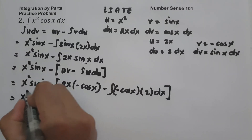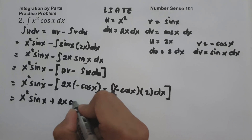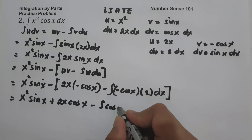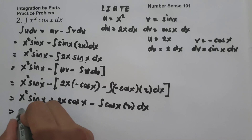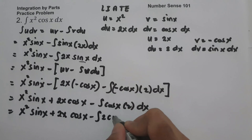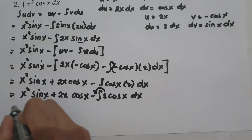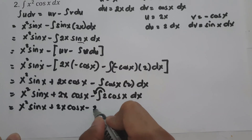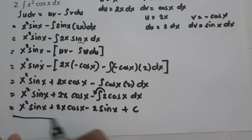Tracking the signs: negative times negative cos(x) is positive, then multiplied by negative gives negative. So combining everything: x²·sin(x) plus 2x·cos(x) minus 2 times the antiderivative of cos(x) dx. The antiderivative of cos(x) is sin(x), so the final answer is x²·sin(x) plus 2x·cos(x) minus 2·sin(x), plus C.